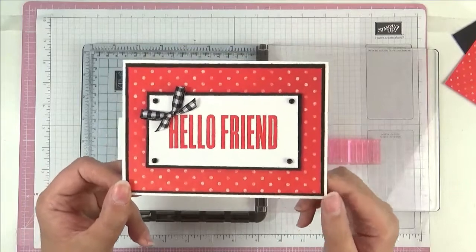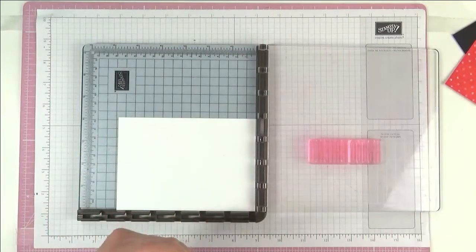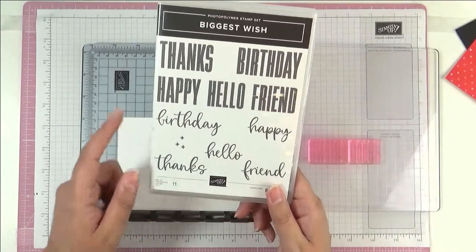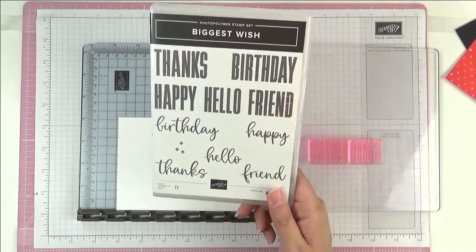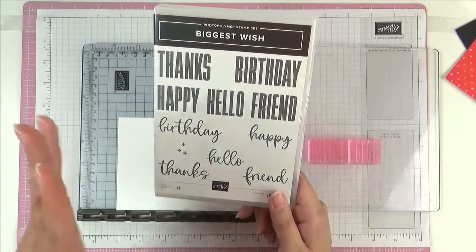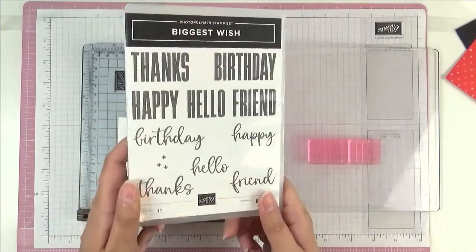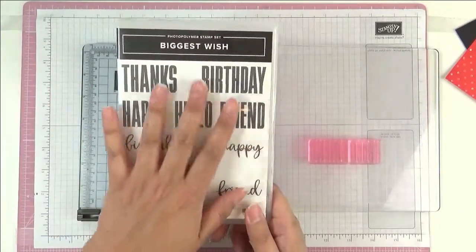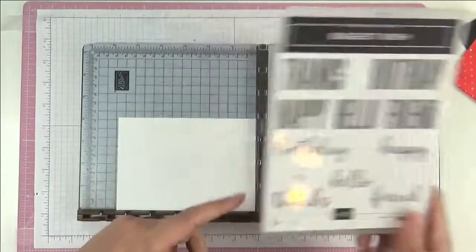Let me show you what I did. The stamp set I'm going to use is this one called Biggest Wish, and I absolutely love this set. I'm filming this before we know what's retiring, so this might be retiring. If it is, make sure you get it before it goes. It's a great and really useful set, really something useful to have in your stash.